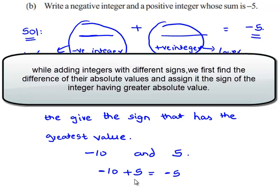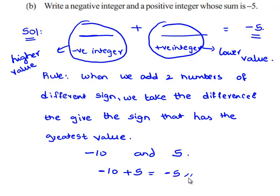Therefore, we give the negative sign to the answer. Therefore, -10 + 5 gives -5.